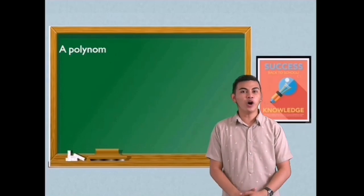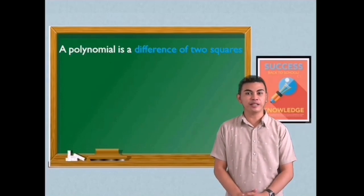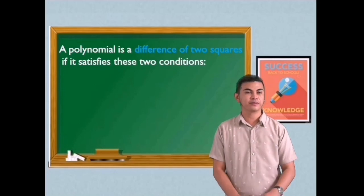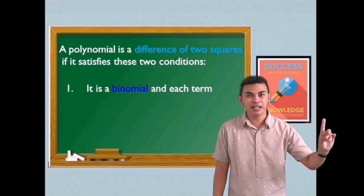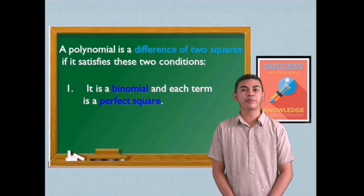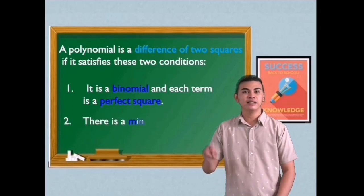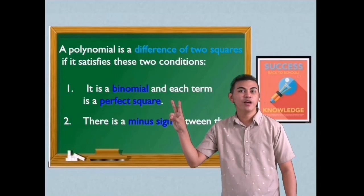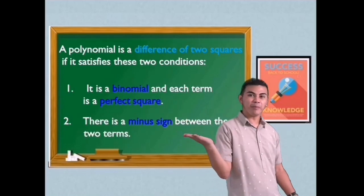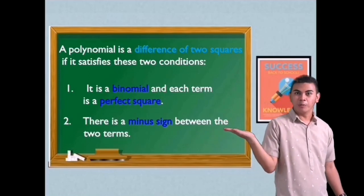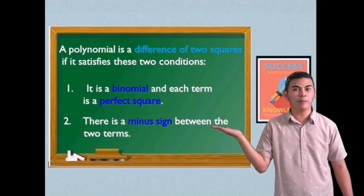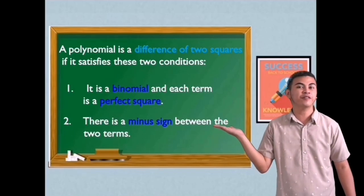A polynomial is a difference of two squares if it satisfies these two conditions. First condition: it is a binomial and each term is a perfect square. Second condition: there is a minus sign between the two terms. Remember that these conditions will be your guide to tell whether a given binomial is factorable by difference of two squares.